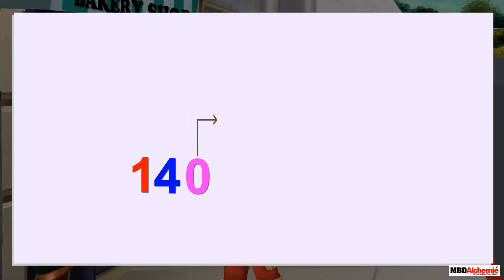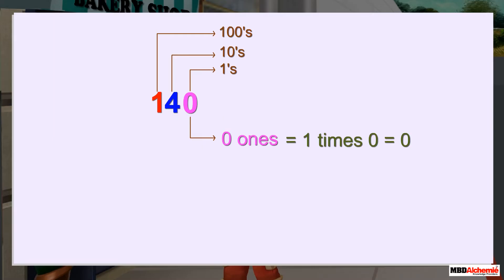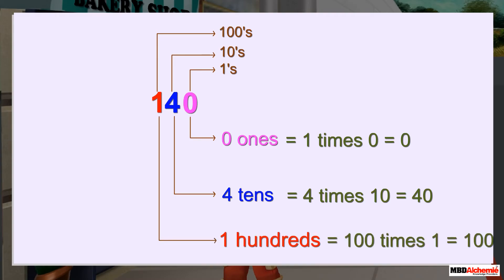Here, zero is at the ones place. Four is at the tens place. And one is at the hundreds place. Zero represents zero ones. Four represents four tens. And one represents one hundred.